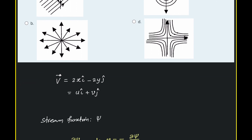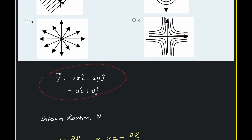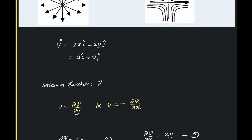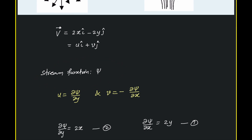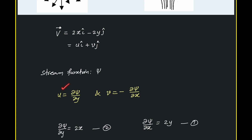Given the velocity vector, we have the x-component and y-component of the velocity, which we call u and v. We know the stream function psi, which is related to the x and y components such that u equals ∂ψ/∂y and v equals minus ∂ψ/∂x. We call this the stream function psi.